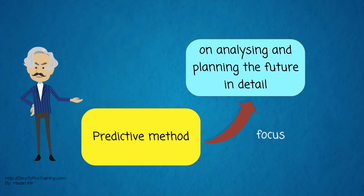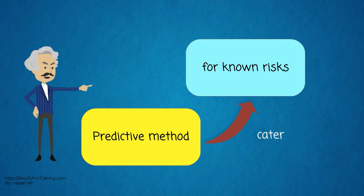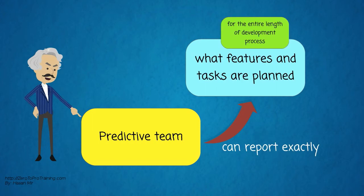Predictive methods, in contrast, focus on analyzing and planning the future in detail, and cater for known risks. In the extremes, a predictive team can report exactly what features and tasks are planned for the entire length of the development process.